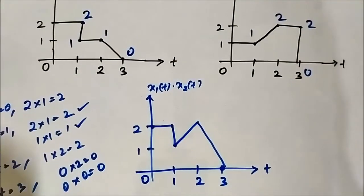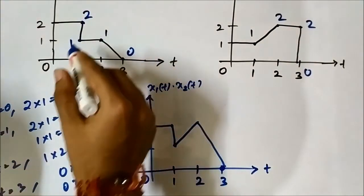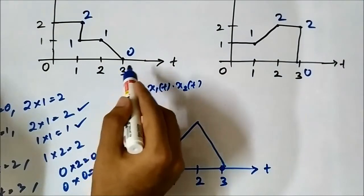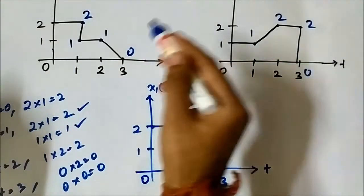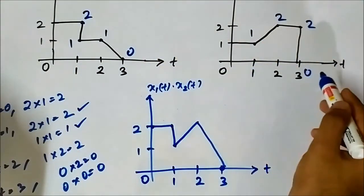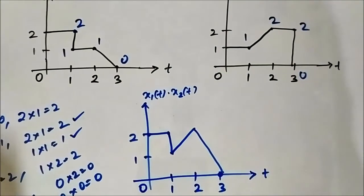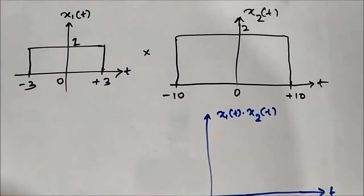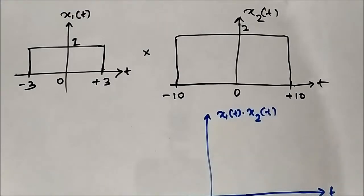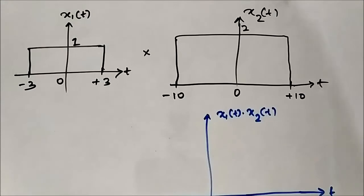So all we have to do is determine the amplitude values at the respective time instances, then multiply those amplitude values at each time instance, and we will get the result. Here we have another two signals on which we have to perform signal multiplication — both of them are rectangular pulse signals.